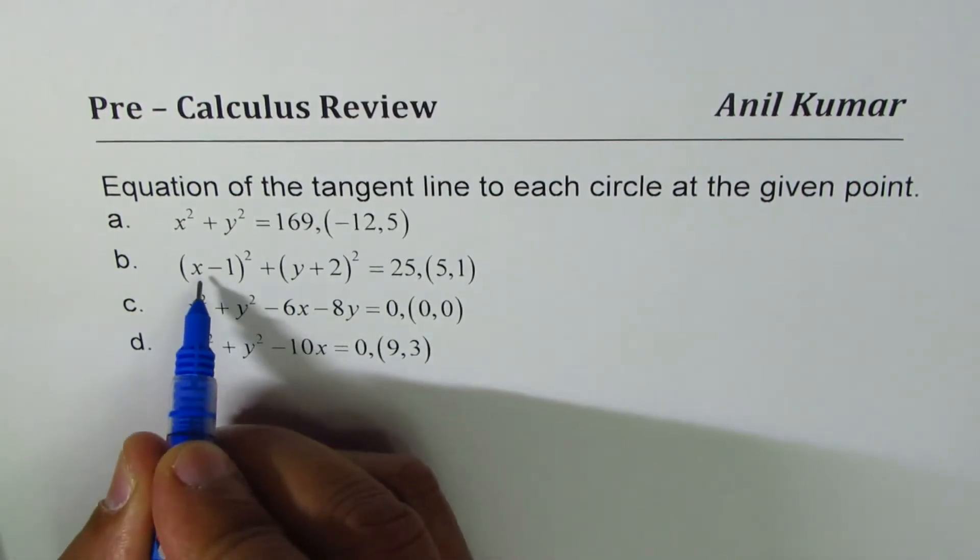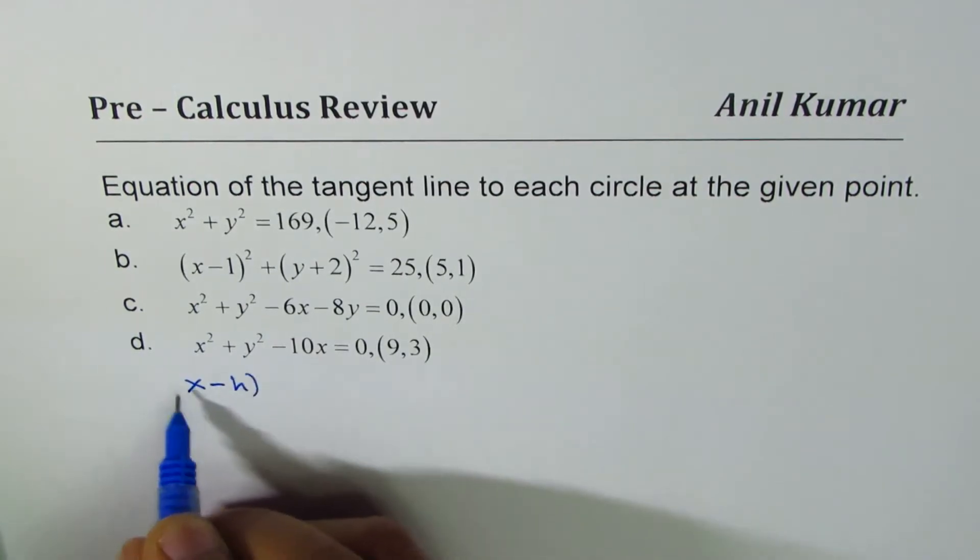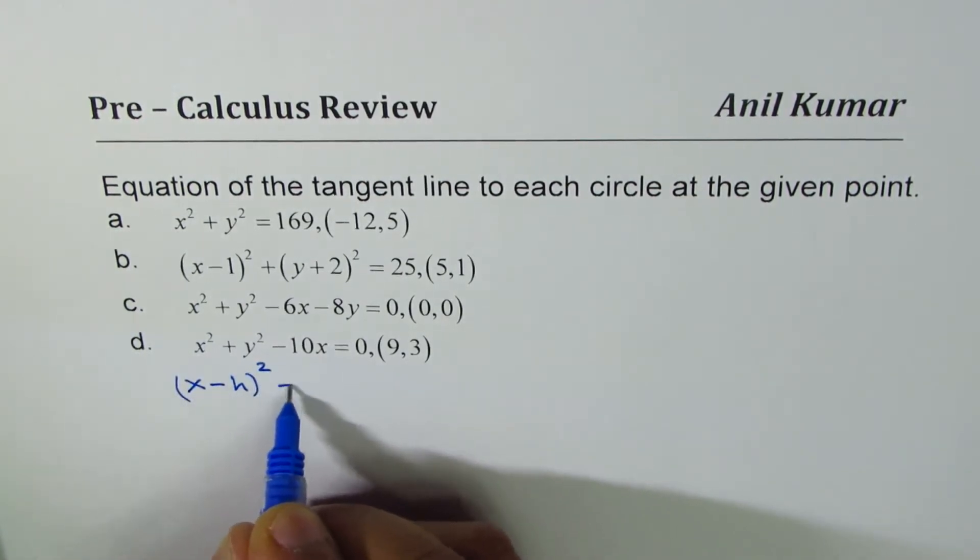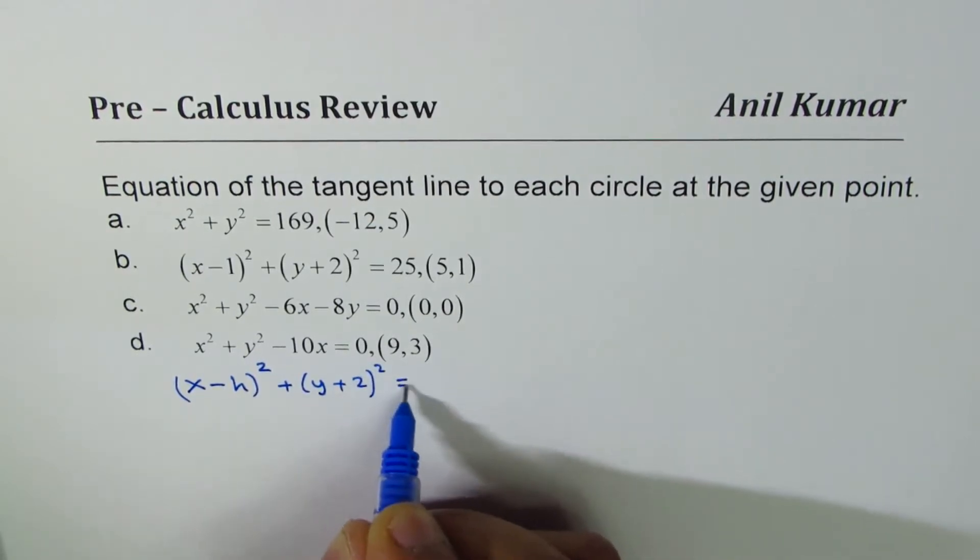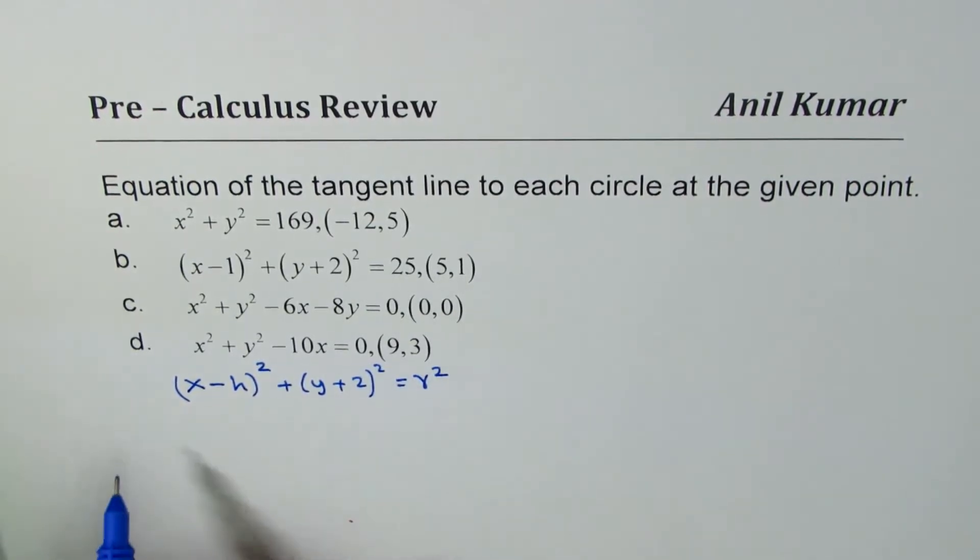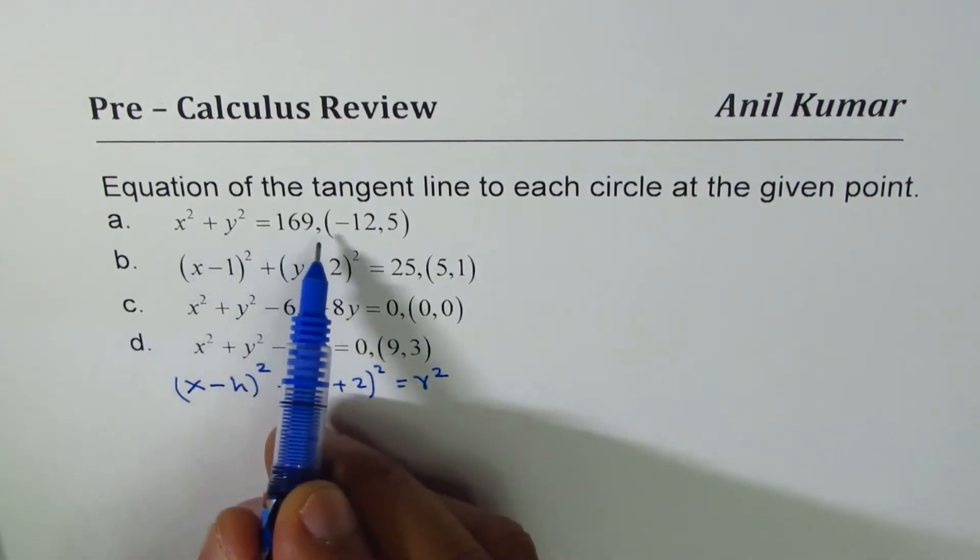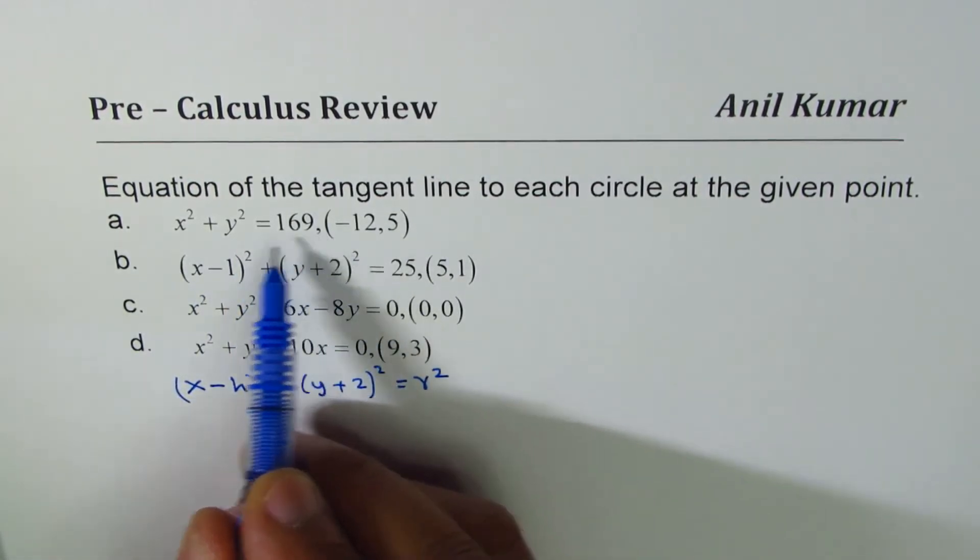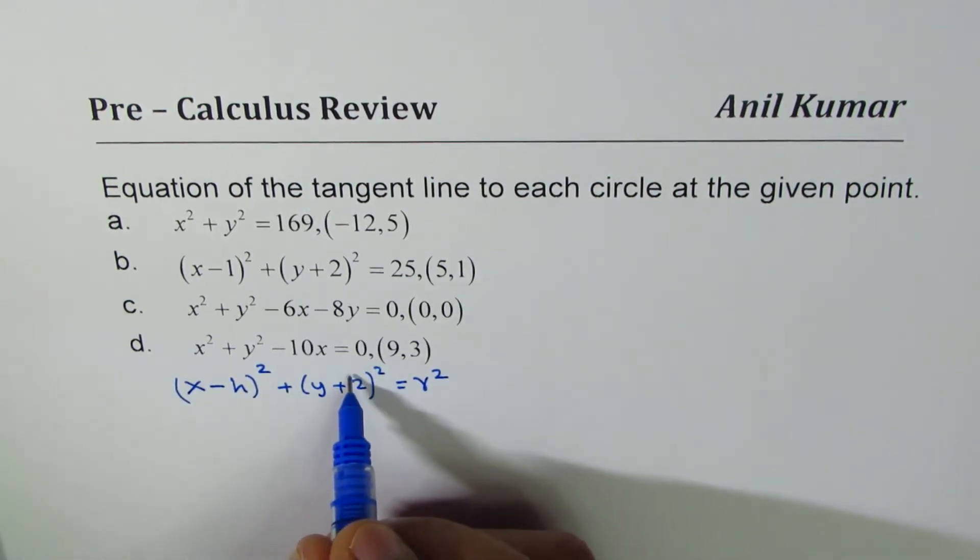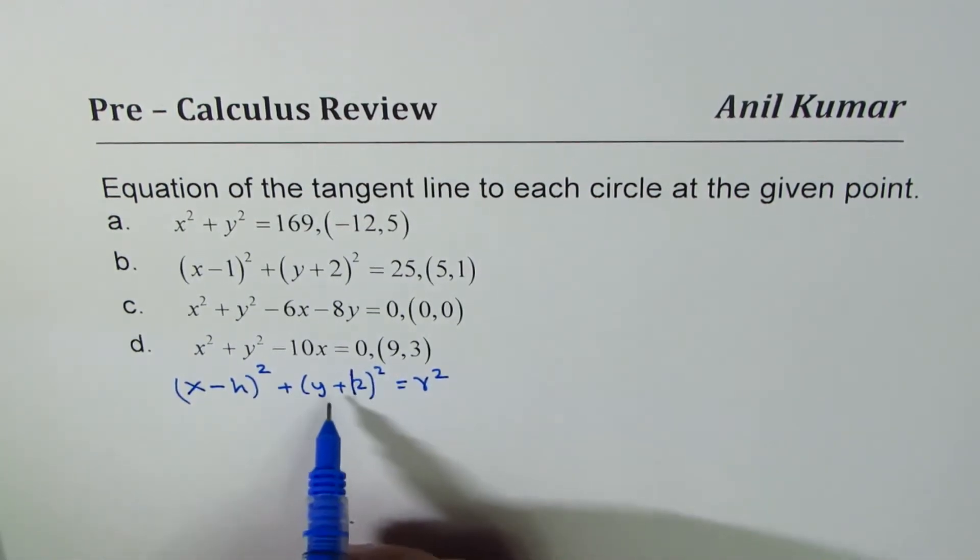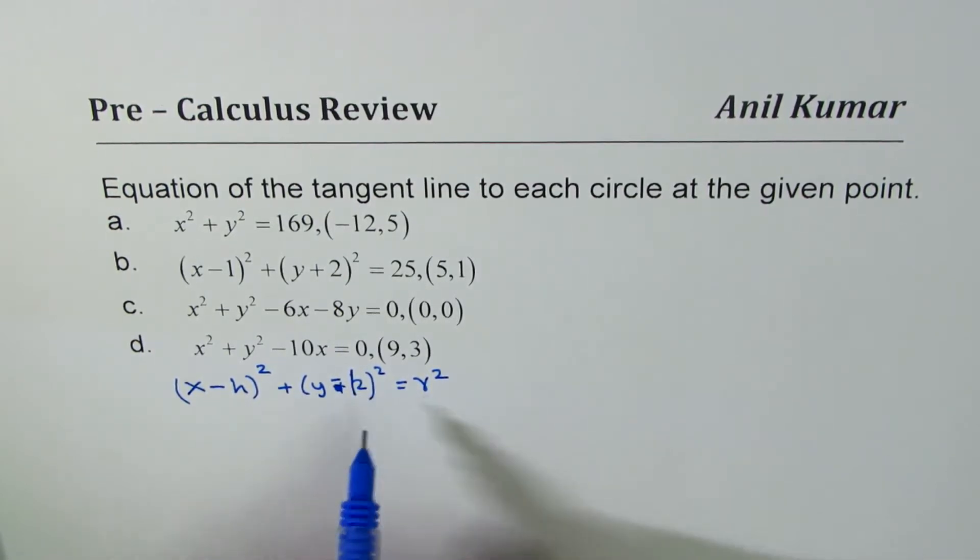The circle is given here as (x-h)² + (y-k)² = r². So h and k is the center. In the first case, we know center is at (0, 0).